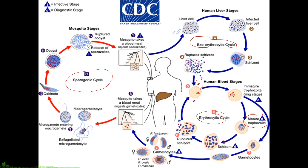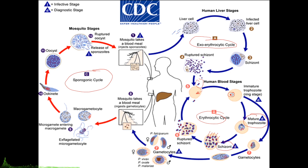DNA replication occurs in the schizont stage, during which daughter merozoites are formed by asexual mitosis — each of these are individual merozoites. Merozoites are released from the erythrocytes and initiate a new round of asexual development. You should take note that Plasmodium digests more than 80% of the erythrocytic hemoglobin to support parasite growth and asexual reproduction during the intraerythrocytic stage.